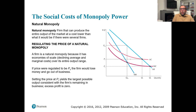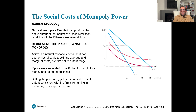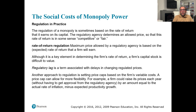Natural monopolies are firms where minimum average total cost is achieved at a very large scale, meaning one firm can produce the entire market output at lower cost than multiple firms. Regulating the price of a natural monopoly is complex because it has economies of scale and declining average and marginal cost over its entire output range. If the price were regulated to Pc, the firm would lose money and go out of business, so setting price at Pr yields the largest possible output consistent with the firm remaining in business.